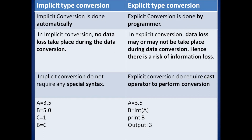Now, for the example of implicit type conversion: A equals 3.5 and B equals 5.0 — here B is having a float type value. Then I'm assigning 1 to variable C, so C is an integer type variable. Then I'm assigning the value of C into B.